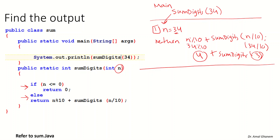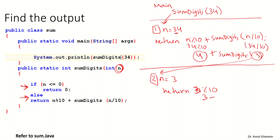We have n = 3 for the second call. Is n less than or equal to 0? It's not, so we go to the else. We return n modulus 10 plus a call to someDigit(n / 10). The value of n is 3, and 3 modulus 10 gives us 3. So we have 3 plus a call to someDigit with n / 10. The value of n is 3, so 3 / 10 — integer division — gives 0. So we call the method and send 0.